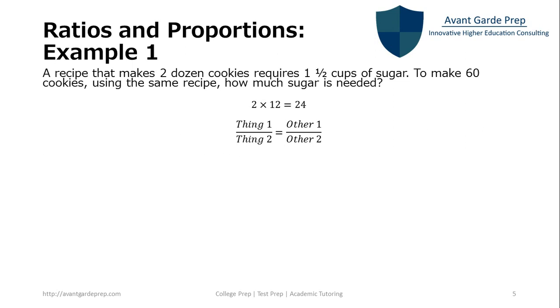So now we can set up our ratio like we had before. Thing one over thing two equals other one over other two. In this case, we know that initially our first given ratio is two dozen cookies to one and a half cups of sugar. So thing one would be twenty-four cookies. Thing two would be one and a half cups of sugar. The other one and other two need to correspond.